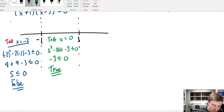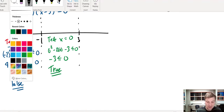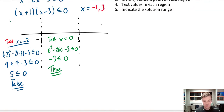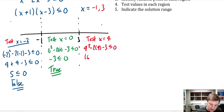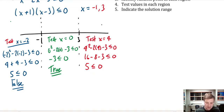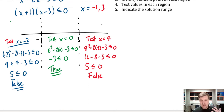Although it's a quadratic and I might have an idea how the last interval will go, I'll test it to be sure. Let's test x equals 4 in the right region. Substituting gives: 4 squared minus 2 times 4 minus 3 less than or equal to 0, which is 16 minus 8 minus 3, giving 5 is less than or equal to 0. That is false, so the right region is also not part of the solution set.